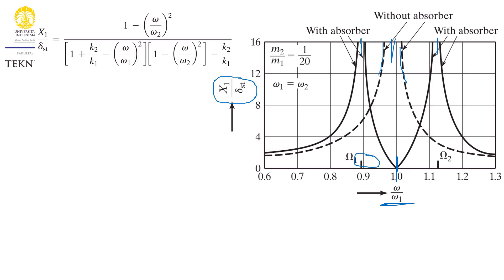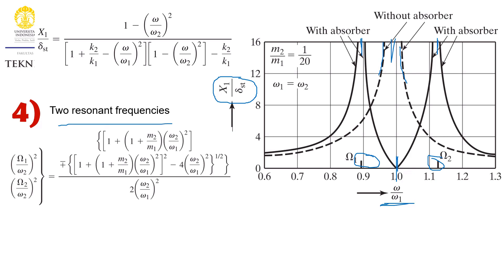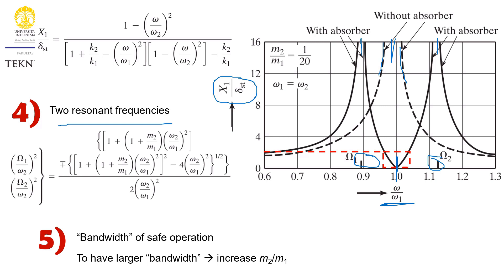We can find the two resonant frequencies using this equation. There is also the concept of bandwidth or safe operation. We would like our system to operate within the proximity of a frequency ratio of one. If the external excitation frequency shifts to the right or to the left, the system can meet a resonance and oscillate very wildly. By defining the maximum allowable amplitude — say two times the static deflection — we can determine the range of frequency ratio that is safe, which is our bandwidth of safe operation.